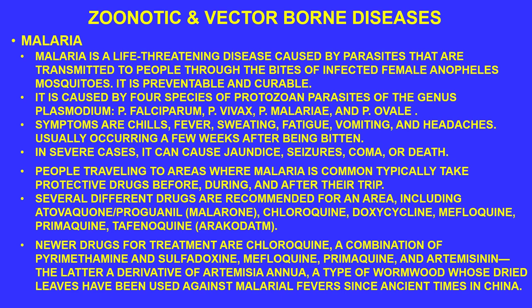People traveling to malaria-endemic areas often take protective drugs before, during, and after the trip, including atovaquone-proguanil (Malarone), chloroquine, primaquine, doxycycline, mefloquine, and tafenoquine. Newer treatment drugs include chloroquine combined with pyrimethamine and sulfadoxine, mefloquine, primaquine, and artemisinin. Artemisinin was isolated by a researcher who won the Nobel Prize after investigating Chinese herbal treatments for malaria. The active agent was isolated from the plant Artemisia annua, a type of wormwood. Sadly, malaria in various parts of the world is now resistant to artemisinin, primaquine, and chloroquine — driving the development of combination drug therapies.